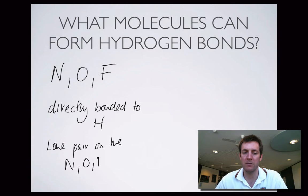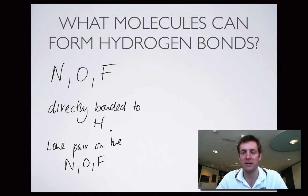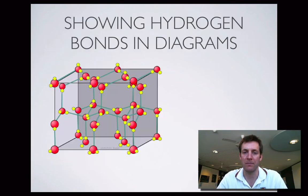Sometimes you're asked to draw diagrams of hydrogen bonds, in which case it's important that you can demonstrate that you know what features the molecule has that enables it to hydrogen bond. So in other words, you have to show these points in your diagram. Let's have a look at how this can be shown.